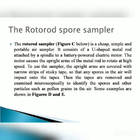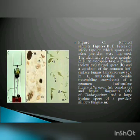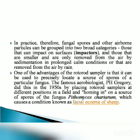The Roto-Rod Sampler is a cheap, simple, and portable air sampler. It consists of a U-shaped metal rod attached by a spindle to a battery-powered electric motor. The motor causes the upright arms of the metal rod to rotate at high speed. The upright arms are covered with narrow strips of sticky tape so that any spores in the air will impact onto the tapes. The tapes are then removed and examined microscopically to identify the spores and other particles such as pollen grains in the air. One advantage is that it can be used to precisely locate a source of spores of a particular fungus.